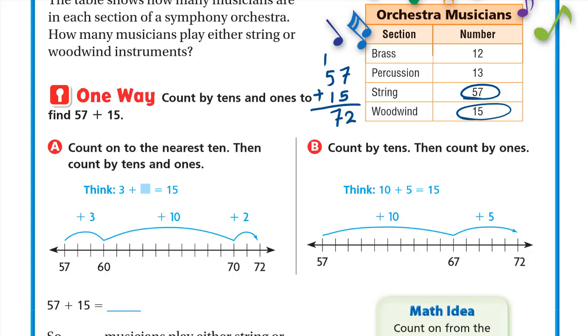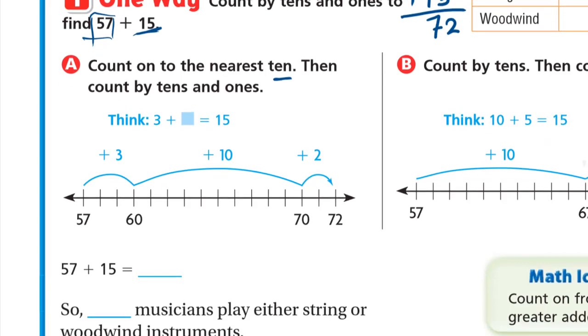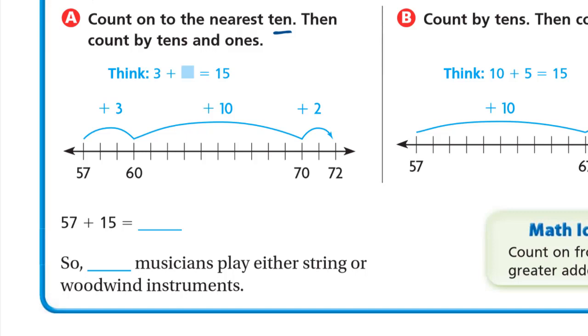One way, count by tens and ones to find 57 plus 15. So we will start always with the bigger number. So 57 we will start with the 57. And we need to add 15. Here in letter A we will count on to the nearest 10. Then count by tens and ones. So 57, after 57, 58, 59, 60. So the next 10 is 60.